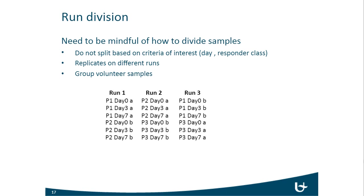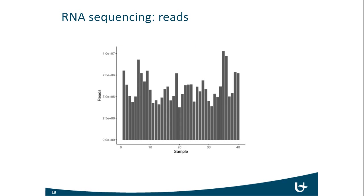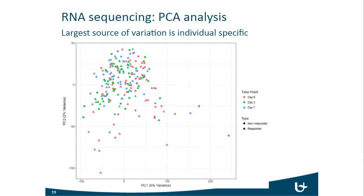We sequenced using the NextSeq and obtained between 3 to 4 million reads per sample at minimum and about 10 million reads per sample at most, which is sufficient for differential expression analysis and to dig deep into gene expression profiles. The first thing we typically do when analyzing this kind of data set is a principal component analysis.